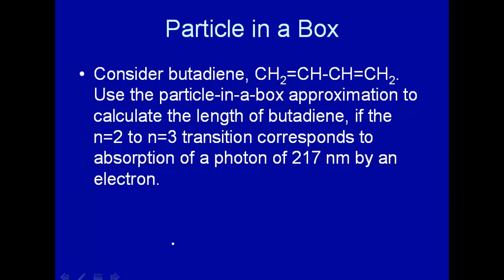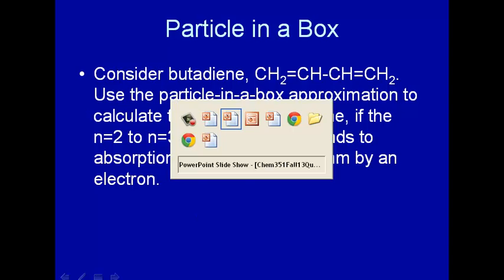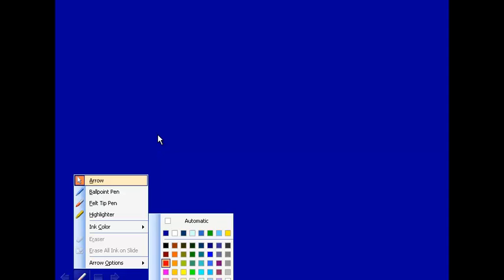Okay, well, why can we use particle in a box for this? Let's consider again butadiene. I'll draw it here, and you may remember from organic chemistry, butadiene. I'll draw the structure here: C double bond C, C double bond C.